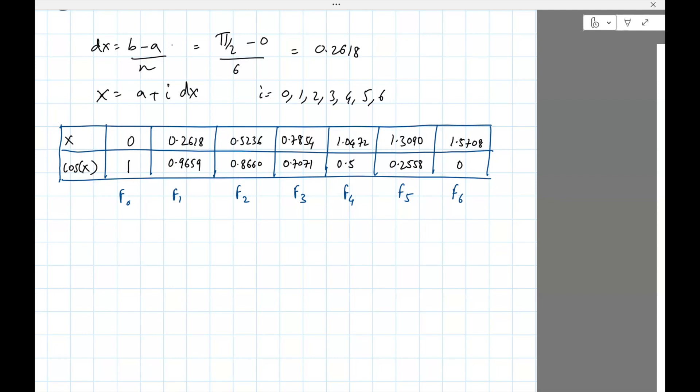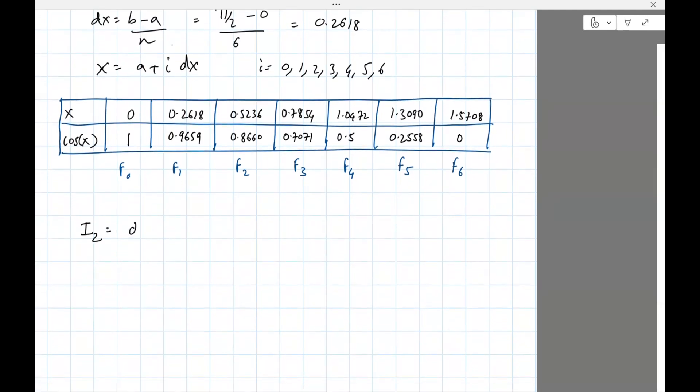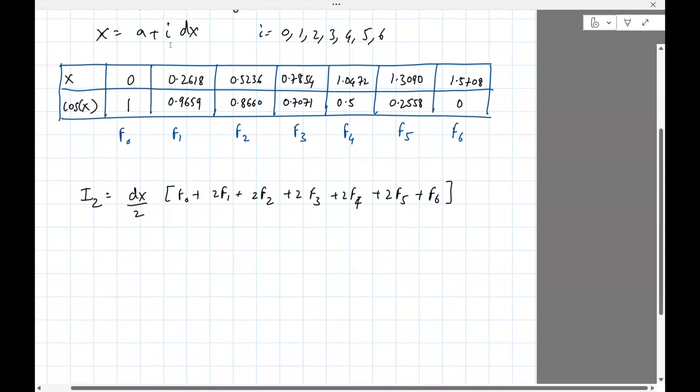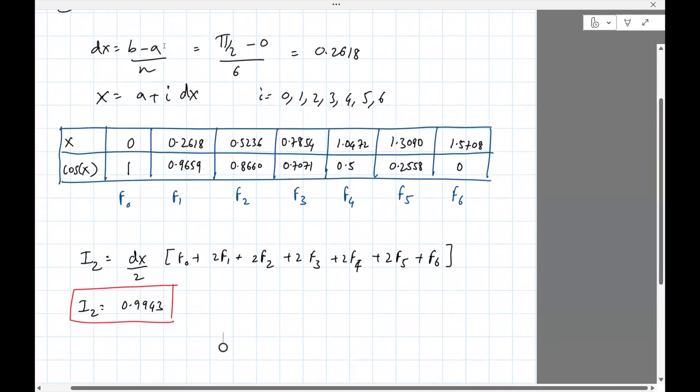Okay, so now if you want to compute this using the trapezoidal approximation, that's going to be dx divided by 2, F0 plus twice F1 plus twice F2 plus twice F3 plus twice F4 plus twice F5 plus F6. So it's just a matter of taking the right numbers from the table and then putting it in a calculator, 0.9943. Okay, so that is our solution for i2 with grid size n equals 6.